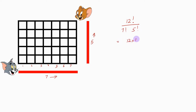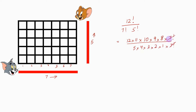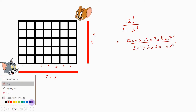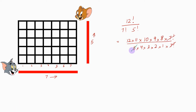So this is 12 × 11 × 10 × 9 × 8 × 7 factorial, divided by 5 × 4 × 3 × 2 × 1 × 7 factorial. The 7 factorials cancel. Then 5 cancels, leaving 2; 4 × 3 = 12, and those 2's cancel. So 9 × 8 × 11 gives the answer as 792. There are 792 ways in which Tom can reach his friend Jerry.